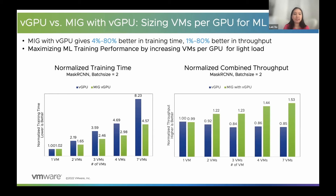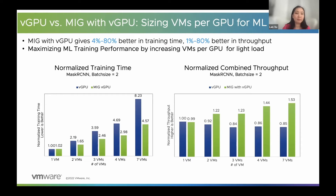Here are the results when we're sizing from 1 to 7 VMs for a training workload. In this case, it's Mask R-CNN. You can see the normalized training time here — the blue bar is vGPU and the green one is MIG vGPU. For 1 VM, there are some small differences in performance between the two options. But when we scale with more and more VMs, the gap between vGPU and MIG vGPU gets bigger. Overall, when we scale more VMs per GPU, MIG is 4 to 80% better in terms of training time.